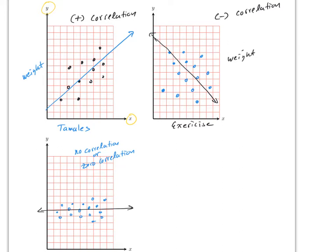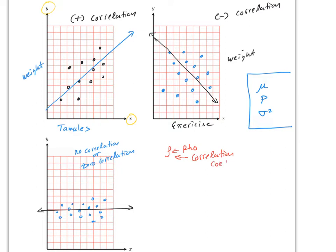How do we measure correlation? We use the last parameter we'll discuss this semester: rho (ρ). This is the population correlation coefficient. Just like mu, p, and sigma squared are parameters, rho is the parameter for correlation.